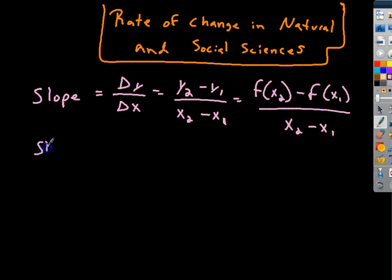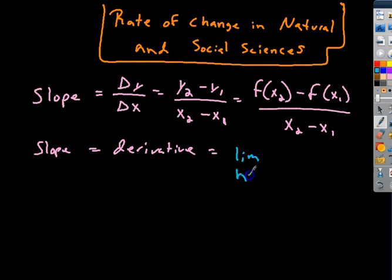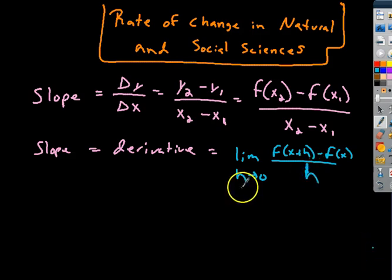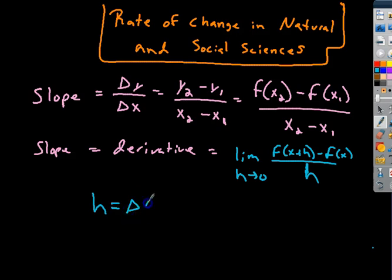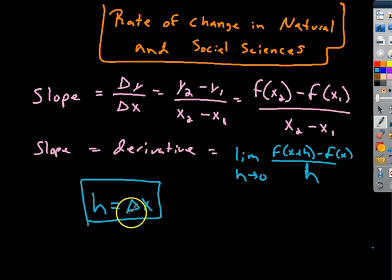The slope of the tangent line equals the derivative. The derivative is equal to the limit as h approaches 0 of f(x + h) minus f(x), all over h. At some point we decided that h was essentially the change in x. As the change in x got smaller and smaller, you could get a line closer and closer to the slope at that point.